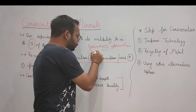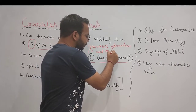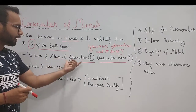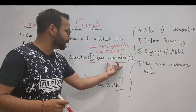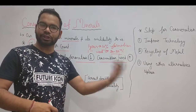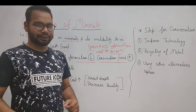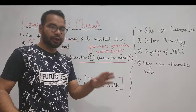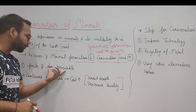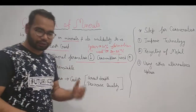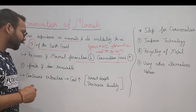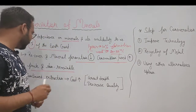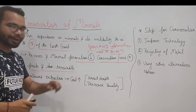Within one year, we use about 20 to 25 percent of minerals. The point being explained here is that the formation rate is much slower than the consumption rate. Since minerals are finite and non-renewable resources, we cannot easily make them again — it takes a very long time to regenerate them.